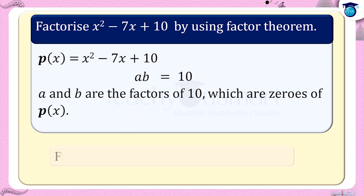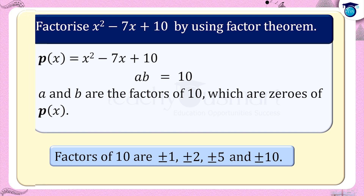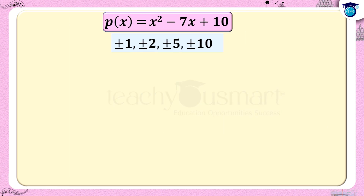We know the factors of 10 are plus or minus 1, plus or minus 2, plus or minus 5, and plus or minus 10. Let us substitute these values in p(x) and see for which value of x, p(x) becomes 0.